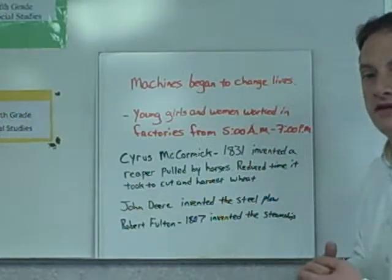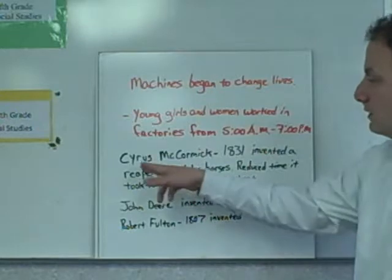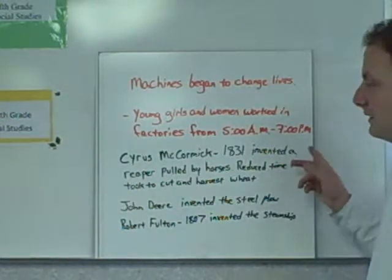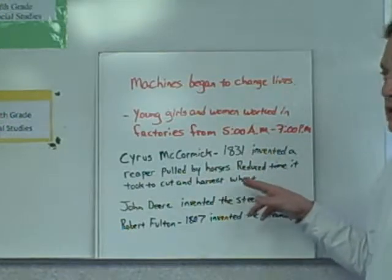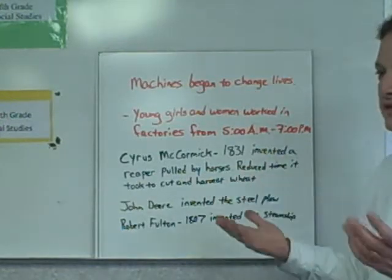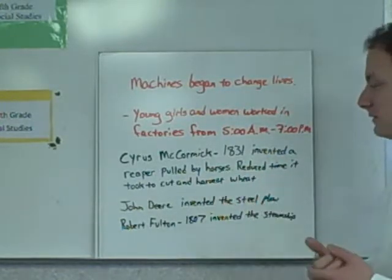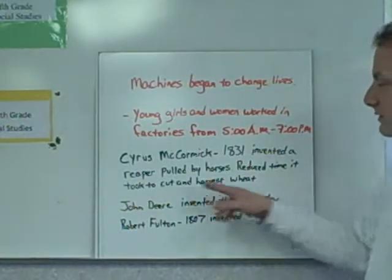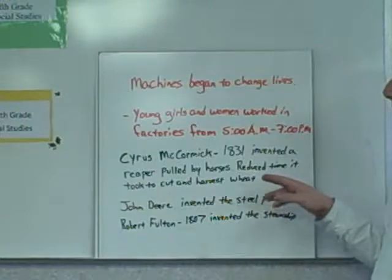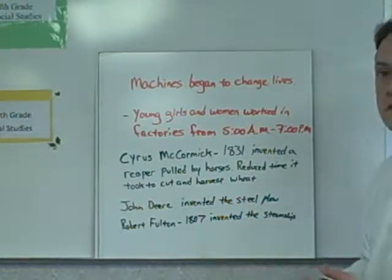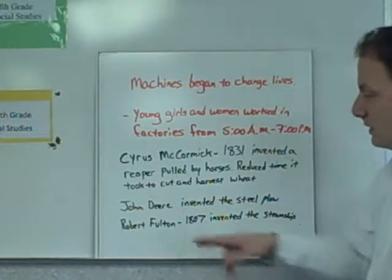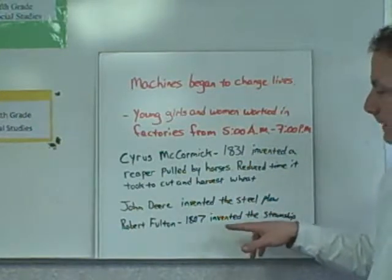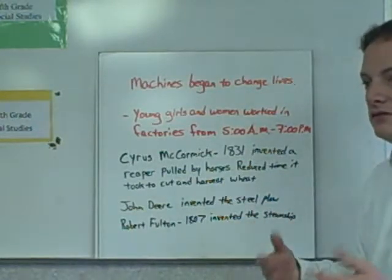We also had Cyrus McCormick, who in 1831 invented a reaper pulled by horses. This reduced the time it took to cut and harvest wheat, so farmers could harvest their wheat fields faster. John Deere invented the steel plow, which allowed farmers to cut through dirt much faster and make larger fields.